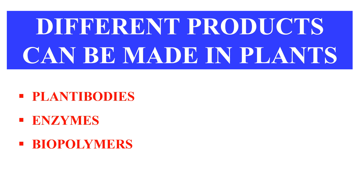For making antibodies, we take the genes for the light and heavy chains and introduce them into the plant, where they join to form a functional antibody. Second, enzymes — we can make particular enzymes like amylase, proteases, etc., by transferring the gene for that enzyme into the plant and then purifying it from the plant material. Third, biopolymers like bioplastics — specifically polyhydroxyalkanoate polymers. We insert the genes involved in the biosynthesis of these biopolymers into plants, where the polymers are formed and can be extracted.